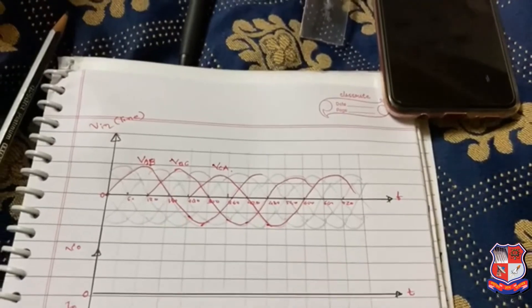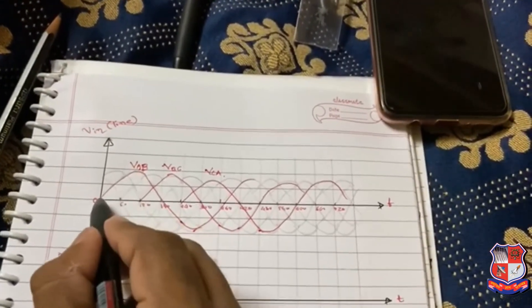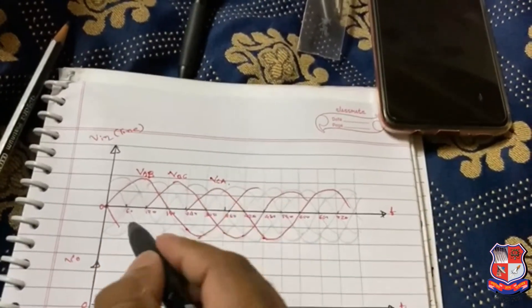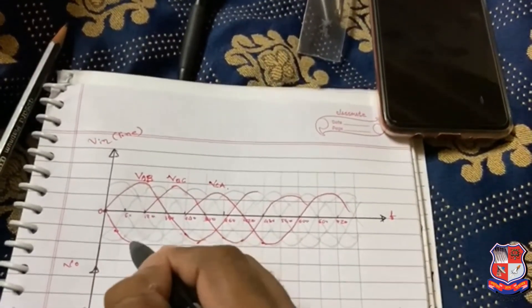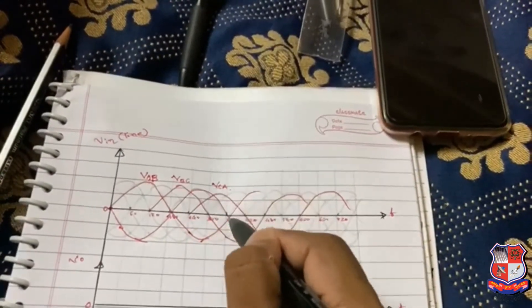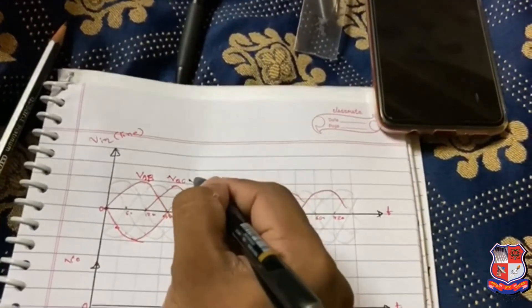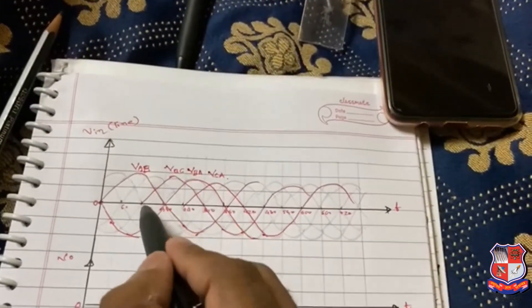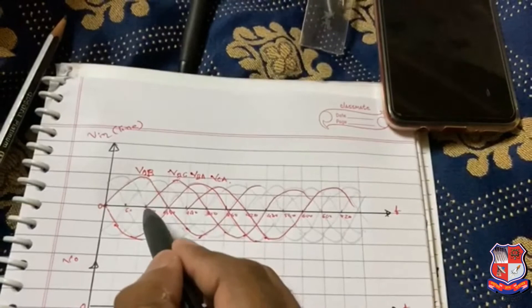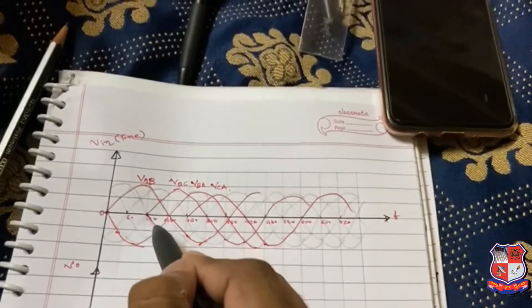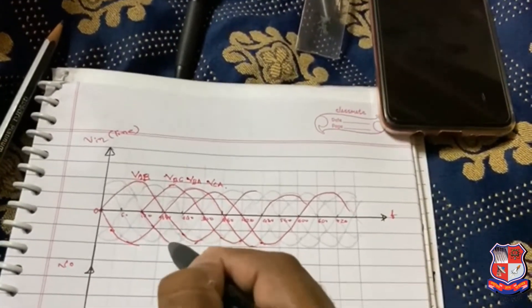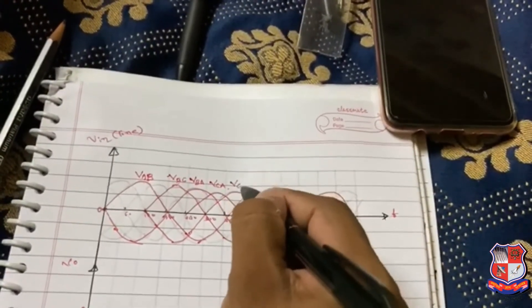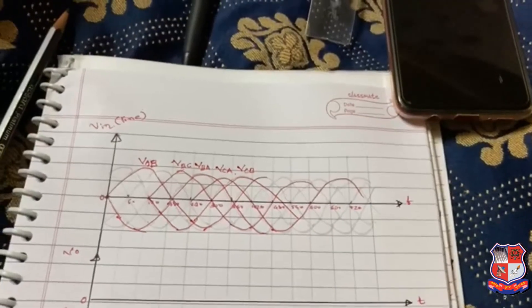Now we know that opposite to VAB, the waveform VBA will be there. Same for opposite to VBC, VCA is there, so the waveform VCA will be there. And last, opposite to VCA means VAC is there.